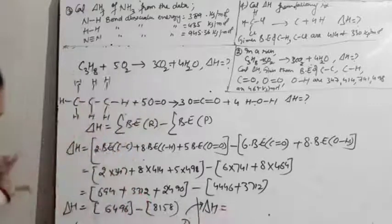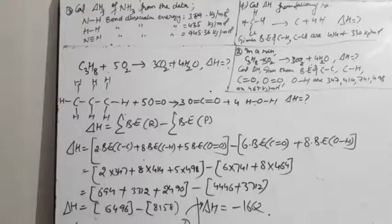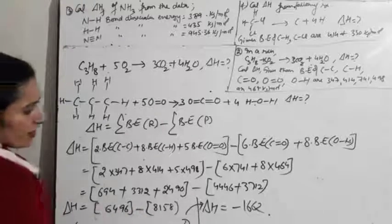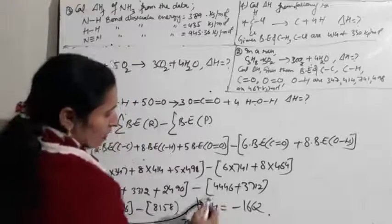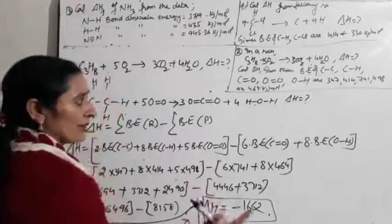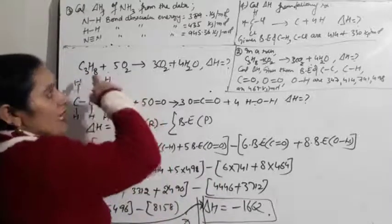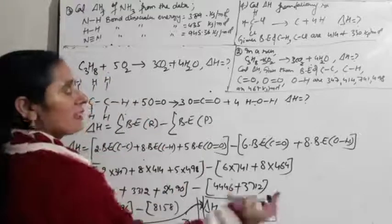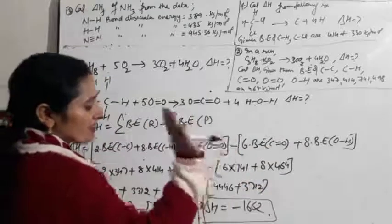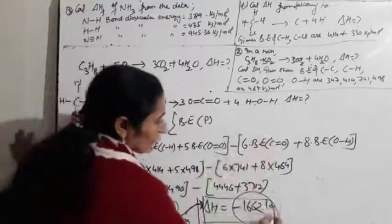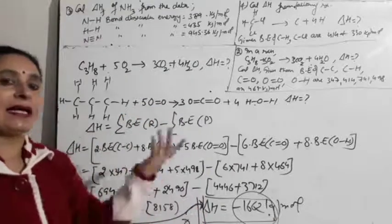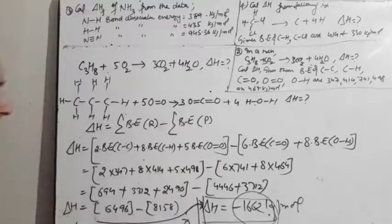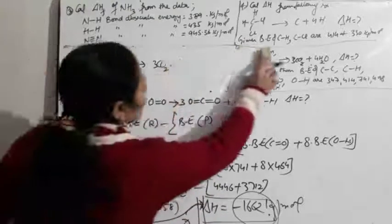Delta H = −1662 kJ/mol. This is negative, meaning the combustion of propane is exothermic — which is expected since combustion is always exothermic. The key is knowing which bonds are present, counting them correctly, and multiplying by their given values.